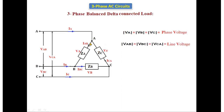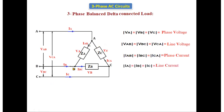The current IAB flows from A to B, IBC flows from B to C, and ICA flows from C to A. IAB, IBC, and ICA are called the phase currents because they flow through the phases. IA, IB, and IC are called the line currents.